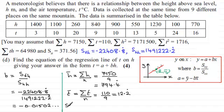So to get a, I'll just put here, since a equals t bar, the mean of t, minus b times the mean of h.